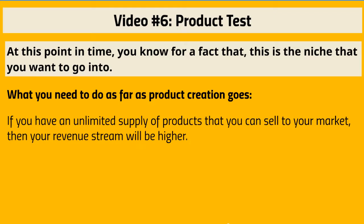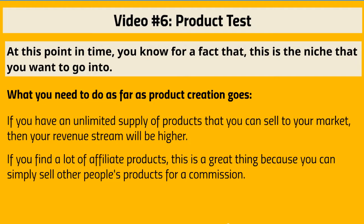There are different routes you can take. You can either find affiliate products — in other words, products that other people have created — and direct your traffic, your blog readers, to them. If they buy, you get an affiliate commission. So if the vendor has a product, let's say a video course, and they give you 50%, for every sale you make you get 50%. The nice thing about this is you don't have to deal with customer support. The downside is you only get half of the commission.